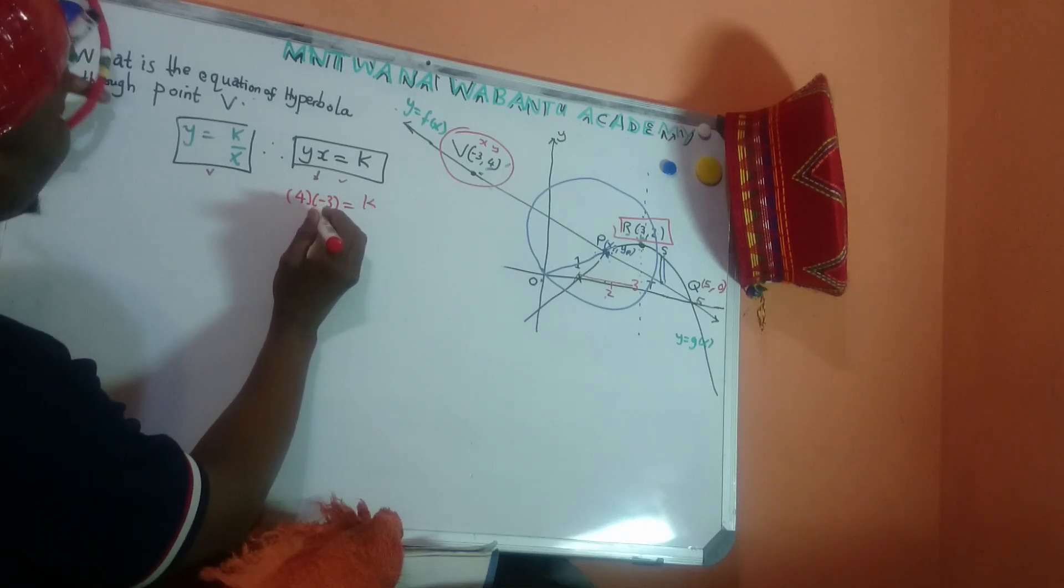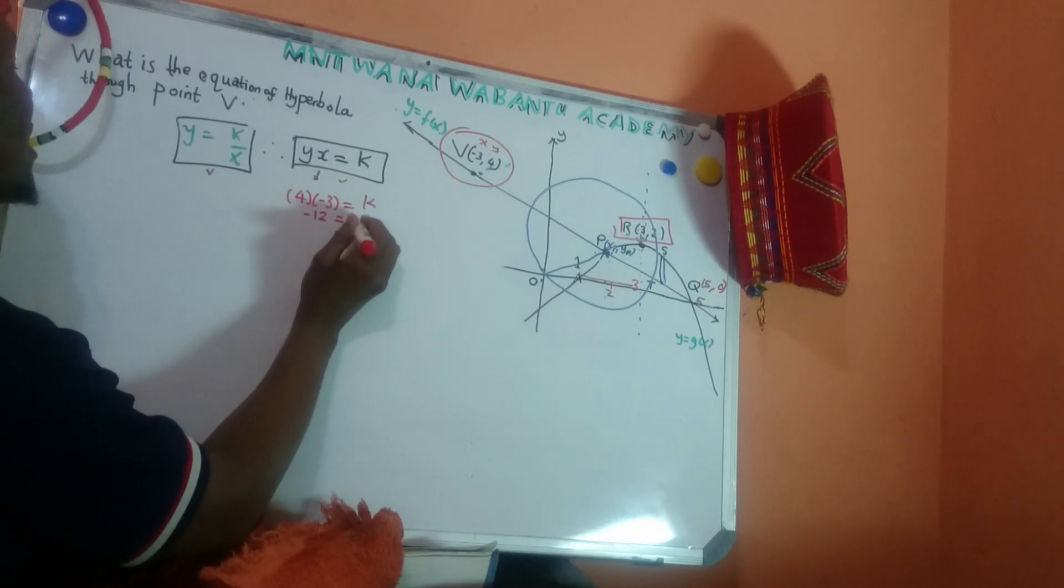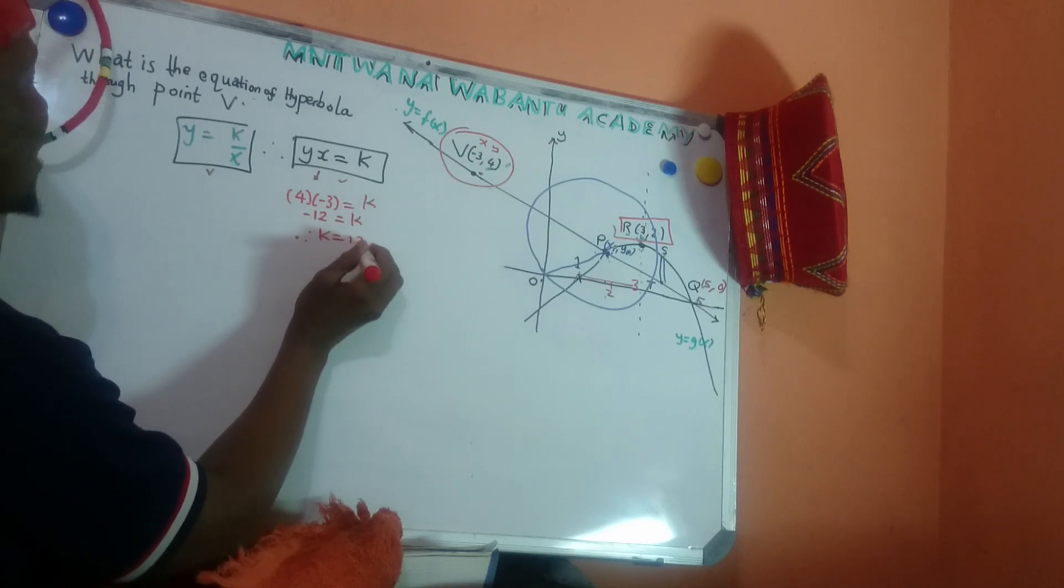4 times negative 3, equal to negative 12, equal to k. So, my k, therefore, equal to negative 12.